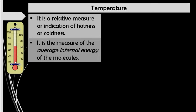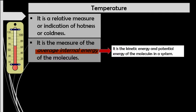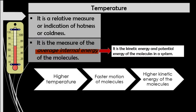If we are measuring the temperature of an object or substance, we are actually measuring the average kinetic and potential energies of the molecules in the system. A higher temperature means faster motion or movement of molecules, and moving fast will result to higher kinetic energy.